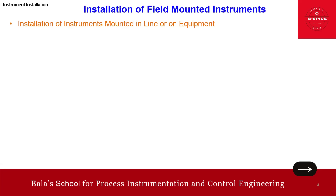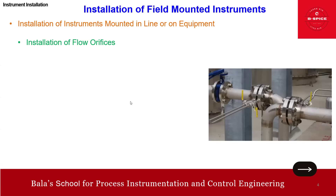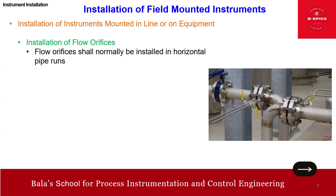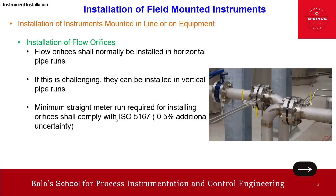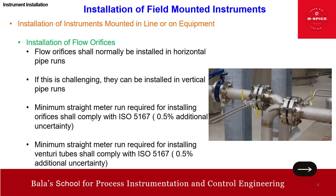First we'll talk about inline instruments, meaning on the line or on the equipment, then we'll cover offline. Starting with installation of flow orifice: the flow orifice shall normally be installed in a horizontal pipeline, but if this is challenging it can also be in a vertical pipe. The minimum straight meter run required for installing an orifice shall comply with ISO 5167 — for example, 14D upstream and 10D downstream. With a 0.5% additional uncertainty, minimum straight run for a venturi tube is also per ISO 5167, ranging from 5D to 20D upstream.